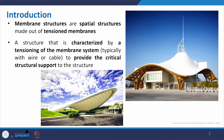The components in this structure are: the membrane or fabric on one hand, and the structural support on the other — which may be a mast, a cable, or a rope. Alternatively, it can be defined as a structure characterized by tensioning the membrane system, typically with wire or cable, to provide the critical shape or structural support to the structure.